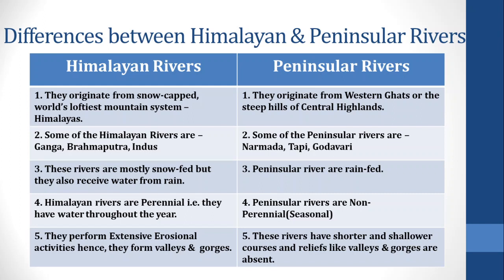Point 3 — Himalayan rivers are mostly snow-fed but they also receive water from rain. Peninsular rivers are rain-fed only. Point 4 — Himalayan rivers are perennial, meaning they have a sufficient amount of water throughout the year. Peninsular rivers are non-perennial, or seasonal — they have sufficient water only during the rainy season.